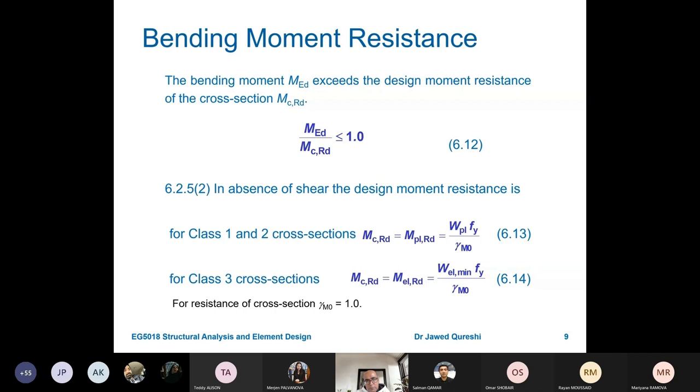M_ED over M_C,RD: moment check means applied versus resistance should be less than or equal to 1. And normally we aim for between 0.85 to 0.9 for economy. For class 1 and 2 sections, we will always have this formula: W_pl*f_y over gamma_M0.